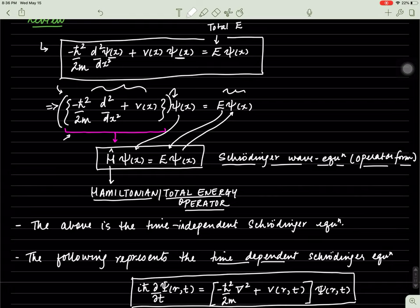This E corresponds to the total energy of the system. This H with the hat is actually called the Hamiltonian or the total energy operator. Essentially it's represented by the sum of the total energy of the system. We'll talk about that more in detail a little bit later.